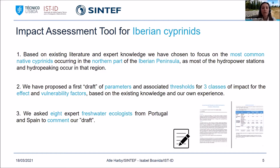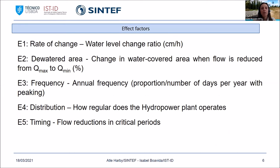When we had this first draft, we shared it with eight experts — water ecologists from both Portugal and Spain — to get their feedback. Wrapping up their comments, we came out with five effect factors, mostly the same as those used before in Norway, but here we developed different levels of impact. In Norway they had four different levels; for the Iberian Peninsula we decided on three different levels, and the ranges were different, because we are dealing with different river systems in Southern versus Northern Europe.